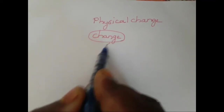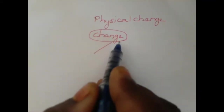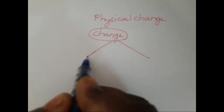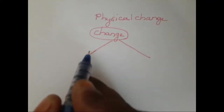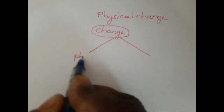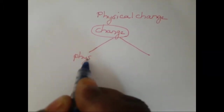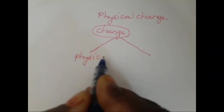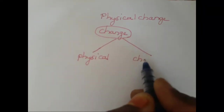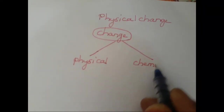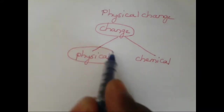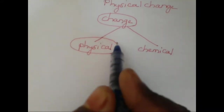So now let us see two different types of changes. Changes can be broadly classified into two types: physical change and chemical change. Today we are going to see about physical change.